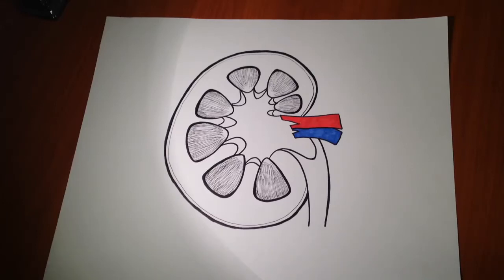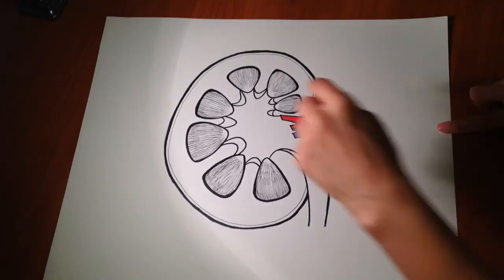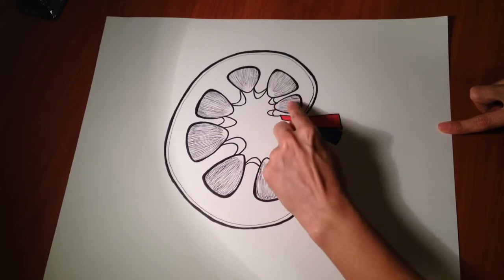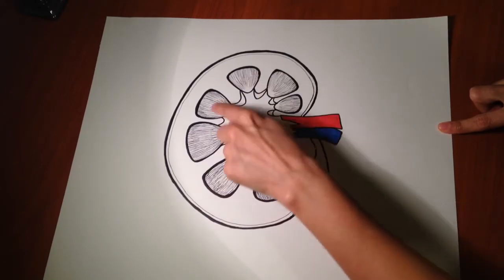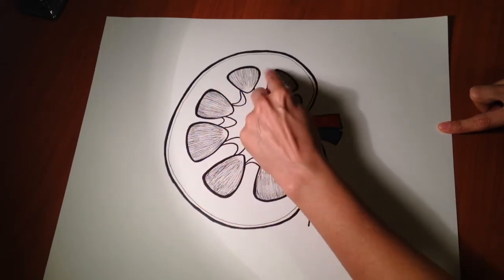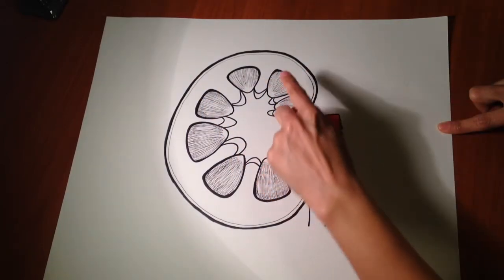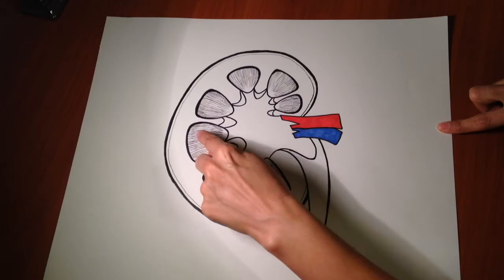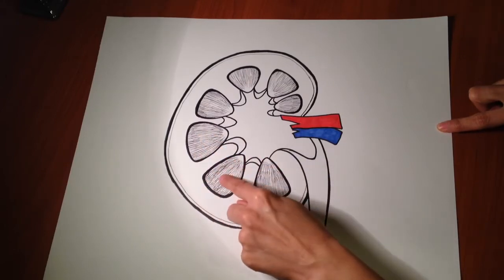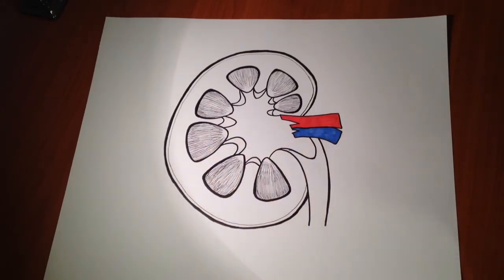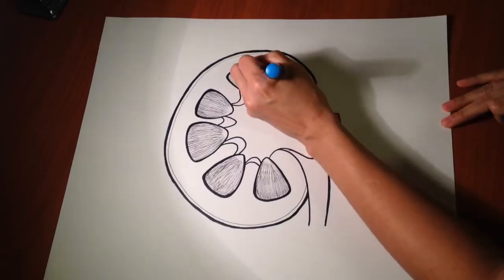In this video I'm gonna cover some basic structures of the kidney. First thing that I want to start out with is talking about the renal pyramids and the renal columns. The triangular shaped structures that you see in the kidney, these are all gonna be renal pyramids. I'm gonna go ahead and color code one of them.